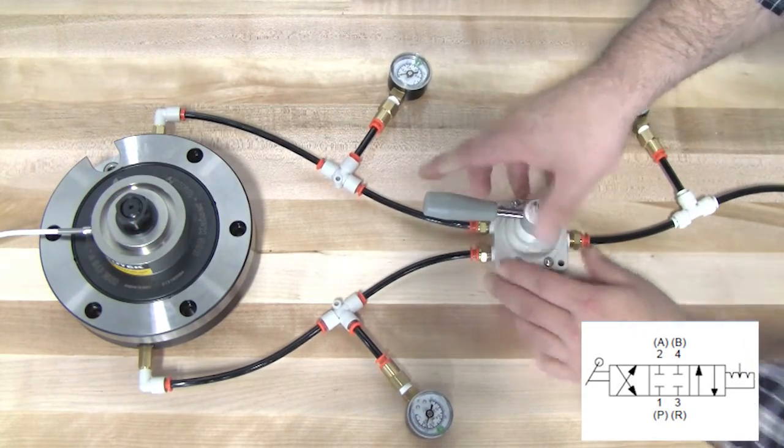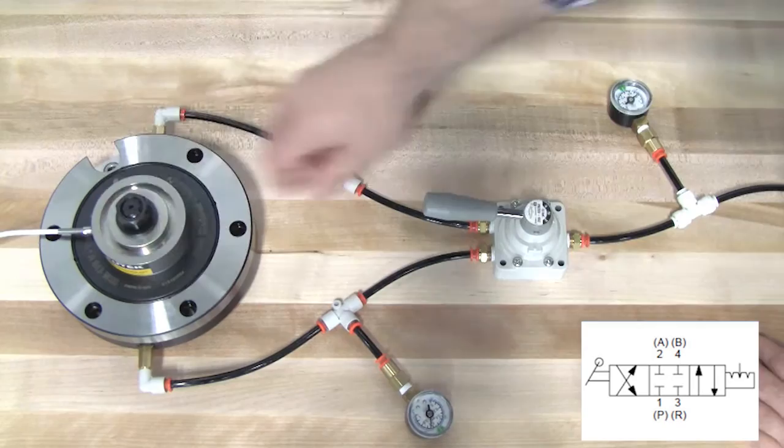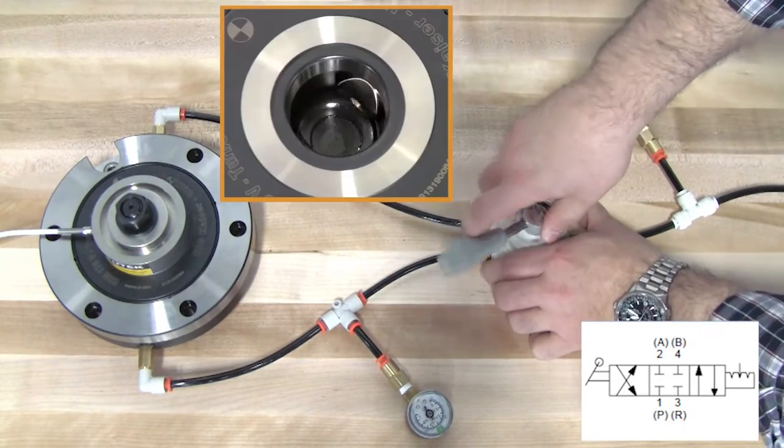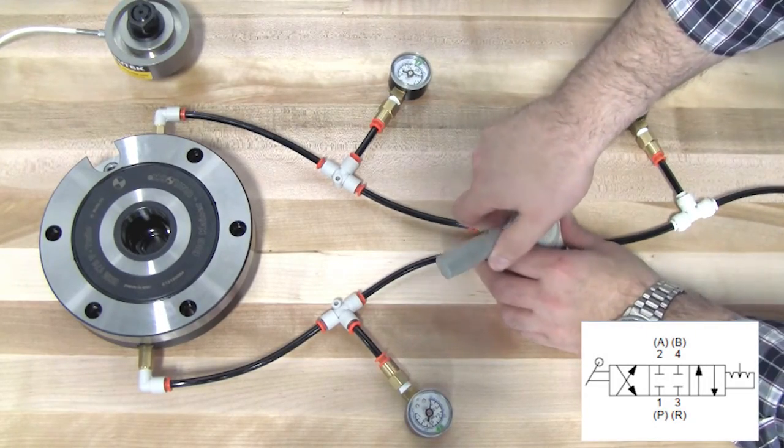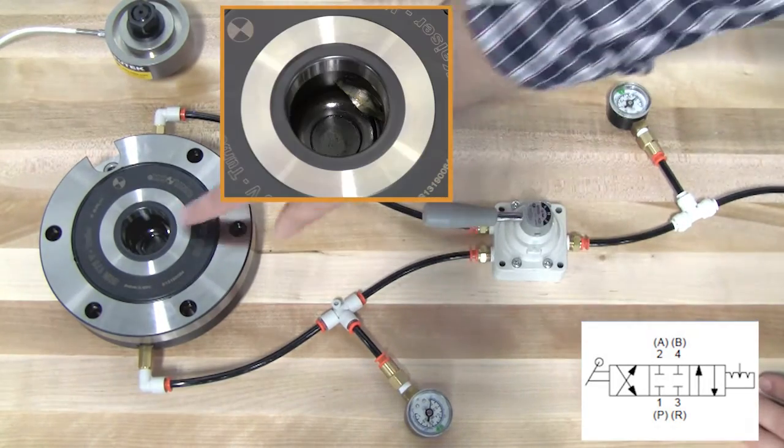The Closed Center position prevents air from either port on the chuck to vent. As the valve moves between supplying the output ports, the center position stops air from venting from the chuck.